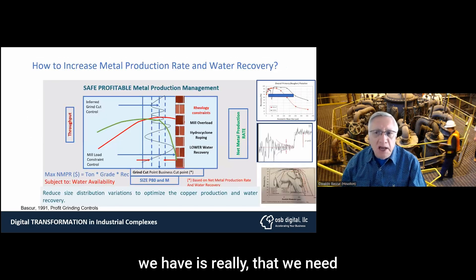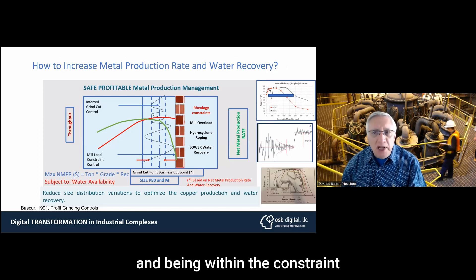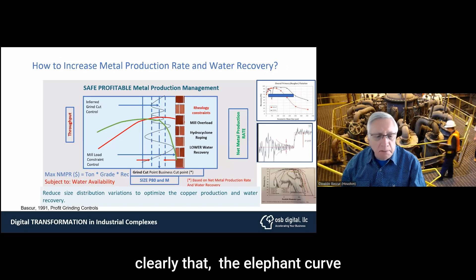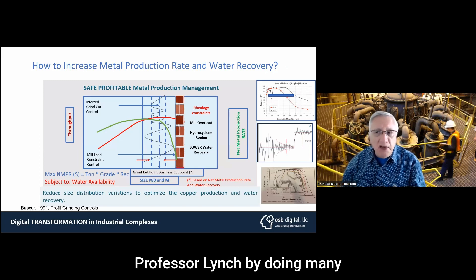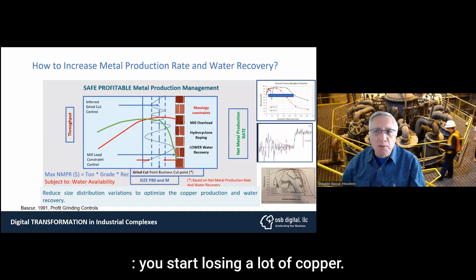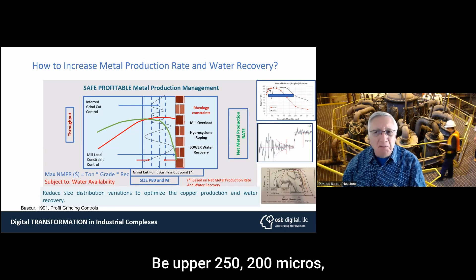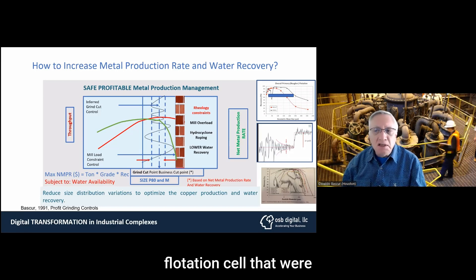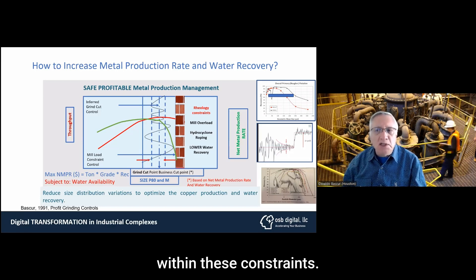The major problem is that we need to maximize the throughput while staying within the constraints of the flotation process. The elephant curve, developed by Professor Lynch through many audits within the industry, is the same thing we see in one of the plants we've been working with: below 50 microns, you start losing a lot of copper. Above 250–200 microns, you lose because the flotation cells have not changed — they are using the same flotation cells that were designed 50 years ago. And that's not going to solve the problem, so we need to work within these constraints.